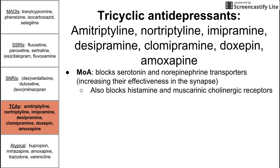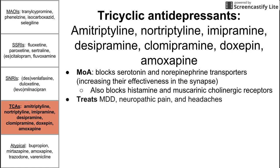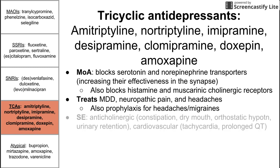In addition to blocking serotonin and norepinephrine transporters, tricyclic antidepressants also block histamine and muscarinic receptors — so they have antihistamine and antimuscarinic effects. These also treat major depressive disorder, neuropathic pain, and headaches. Specifically, some are used for migraine prophylaxis.